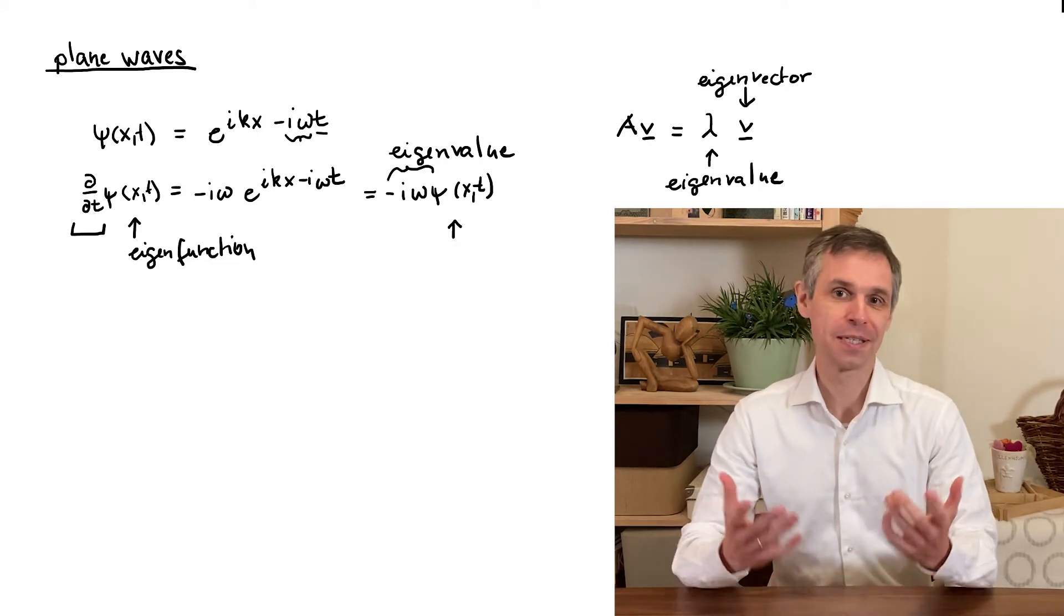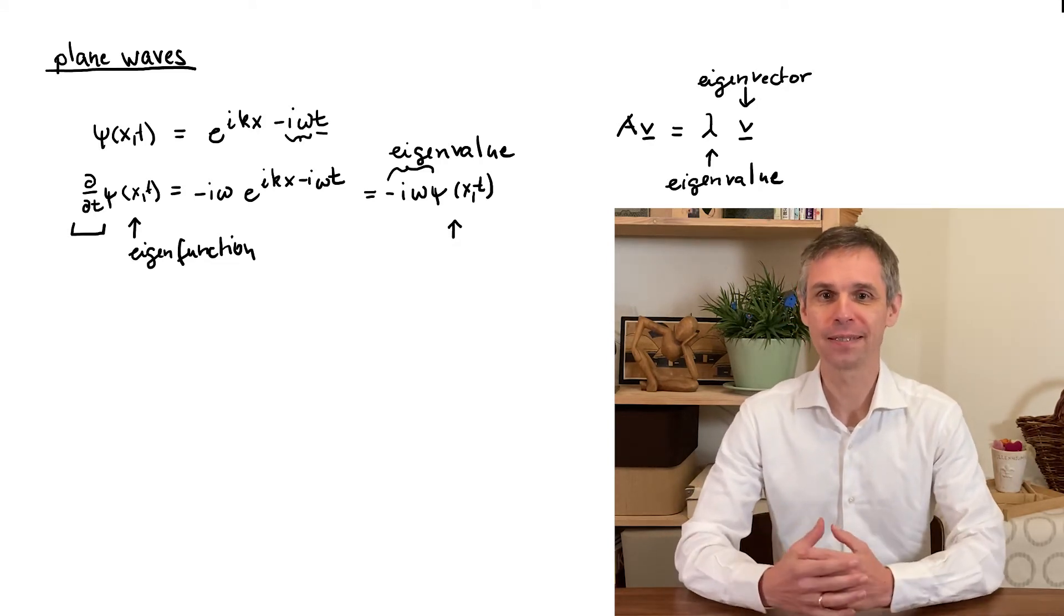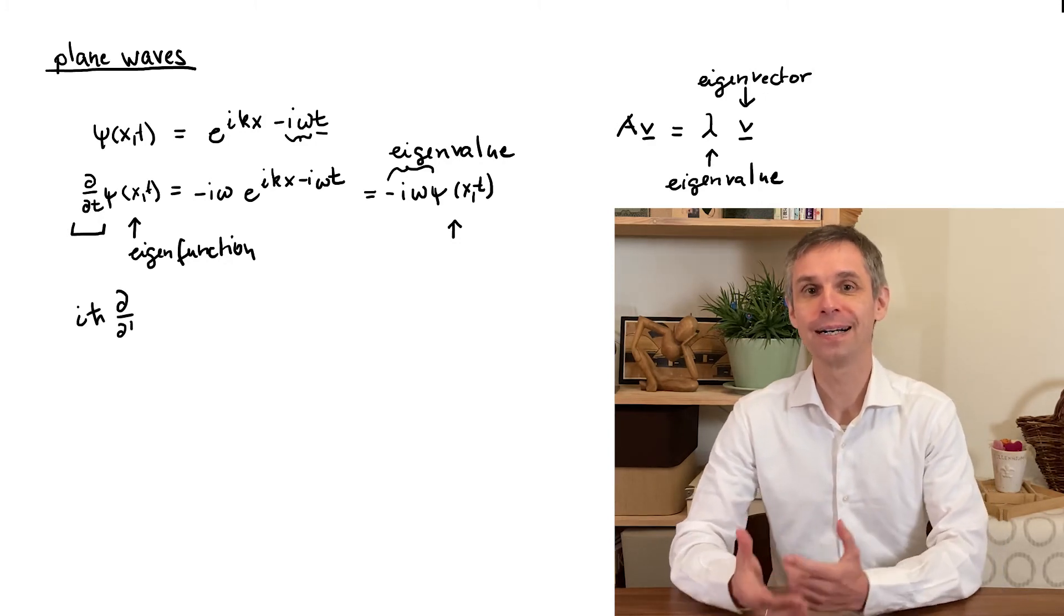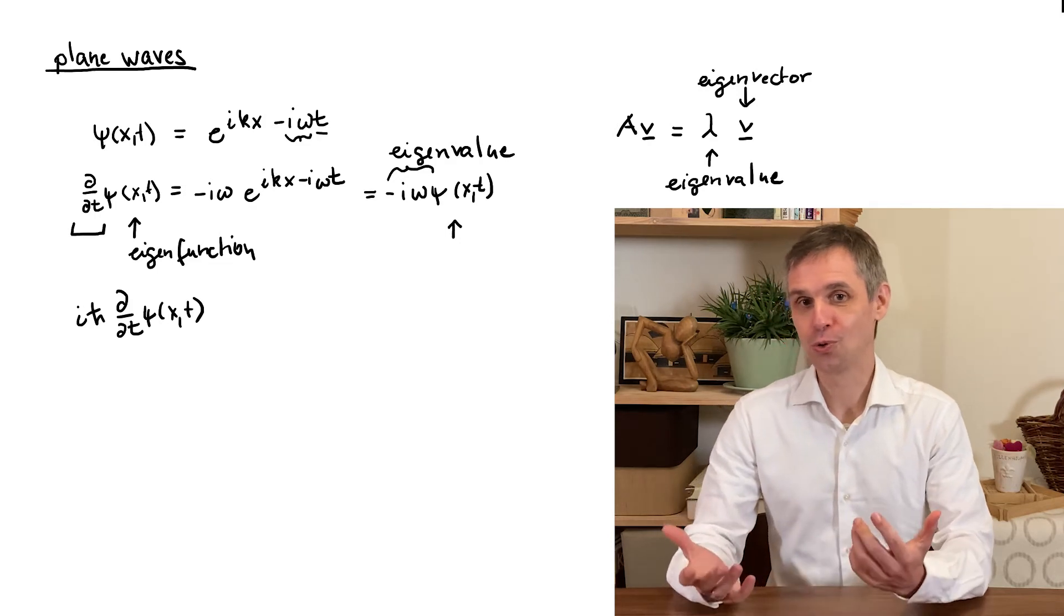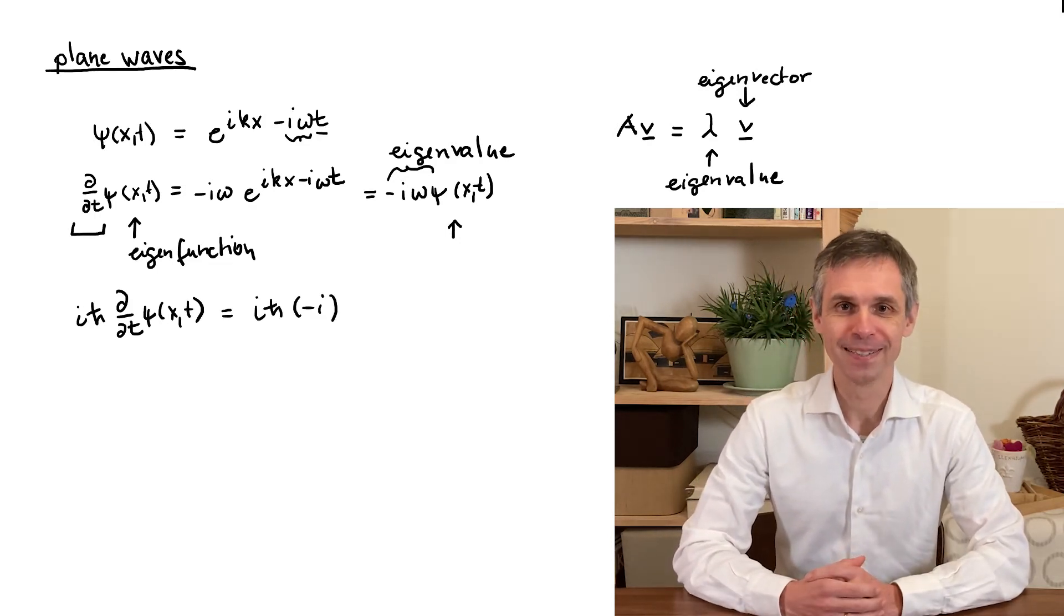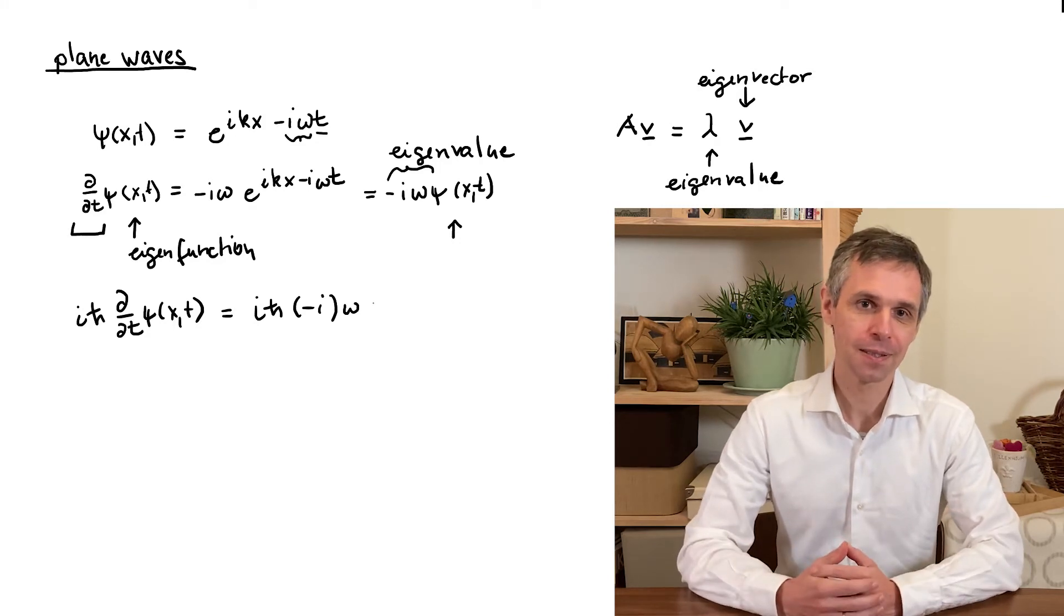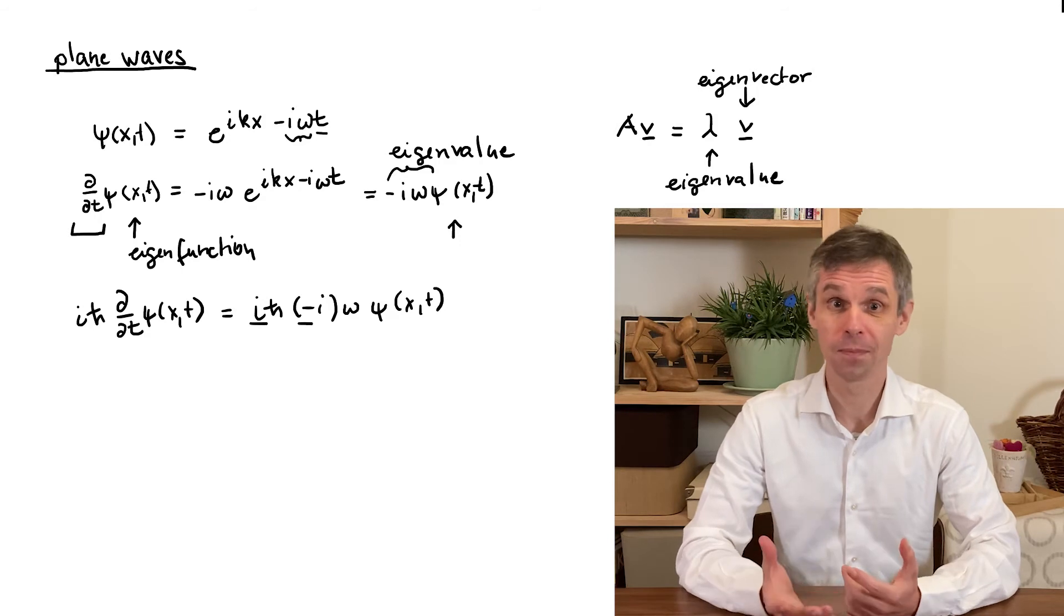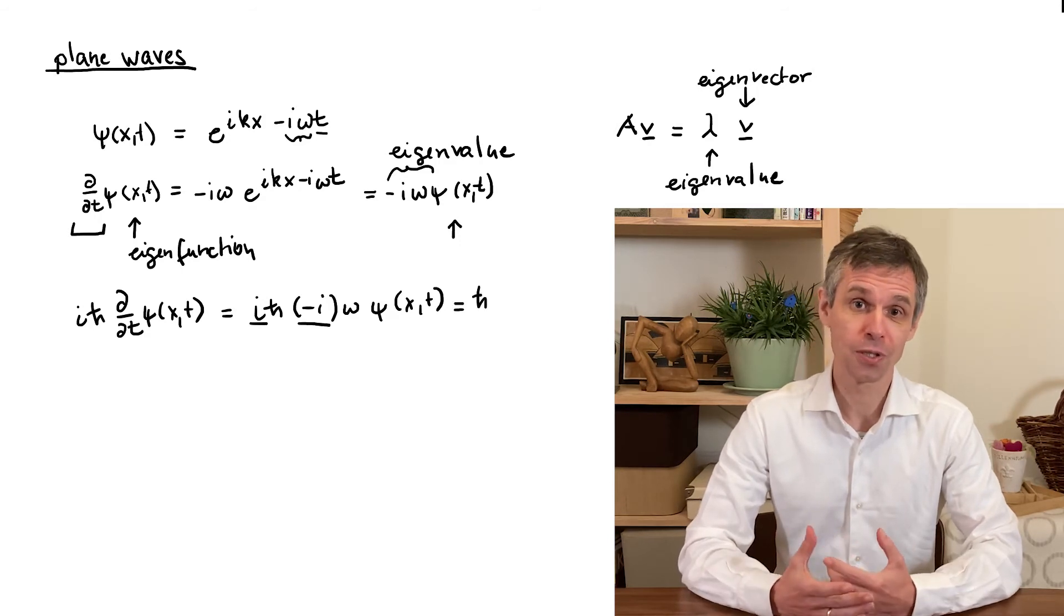So let's consider the situation that instead of only taking the derivative we also multiply the result by ih bar, which we can just do by using the expressions from above and multiplying by this constant.